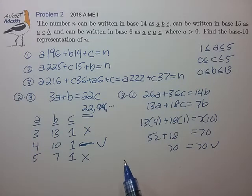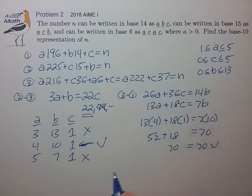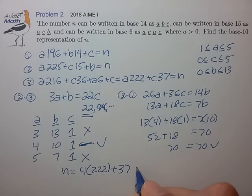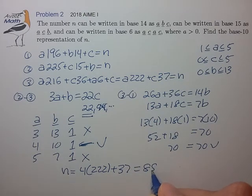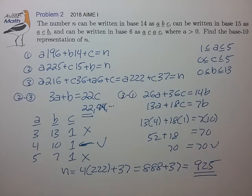Now let's find how to express n. The third equation is probably the easiest. We find that n equals 4 times 222 plus 37, which equals 925, final answer.